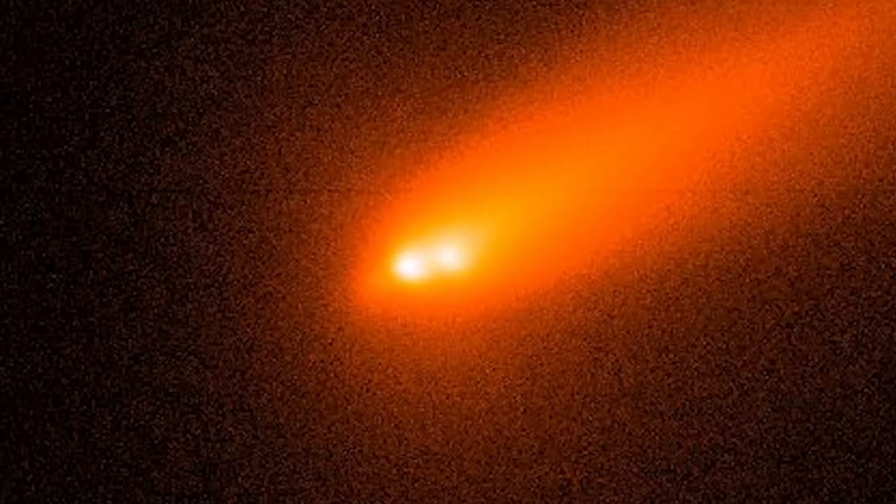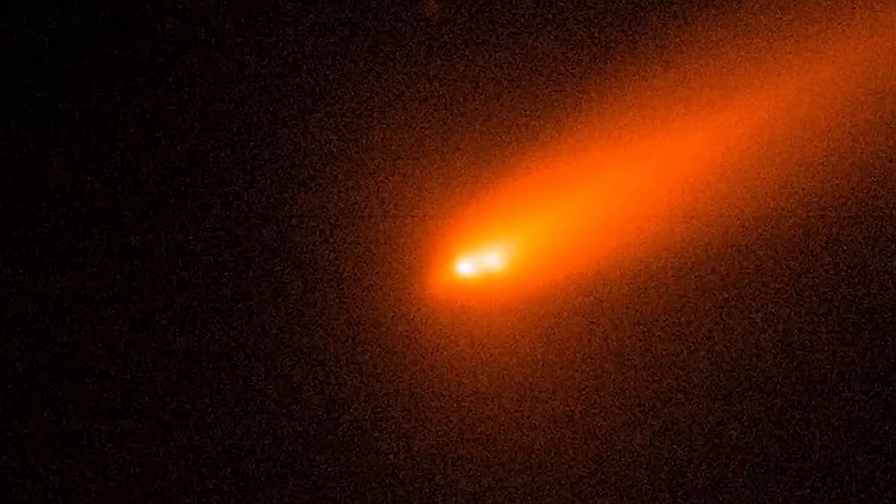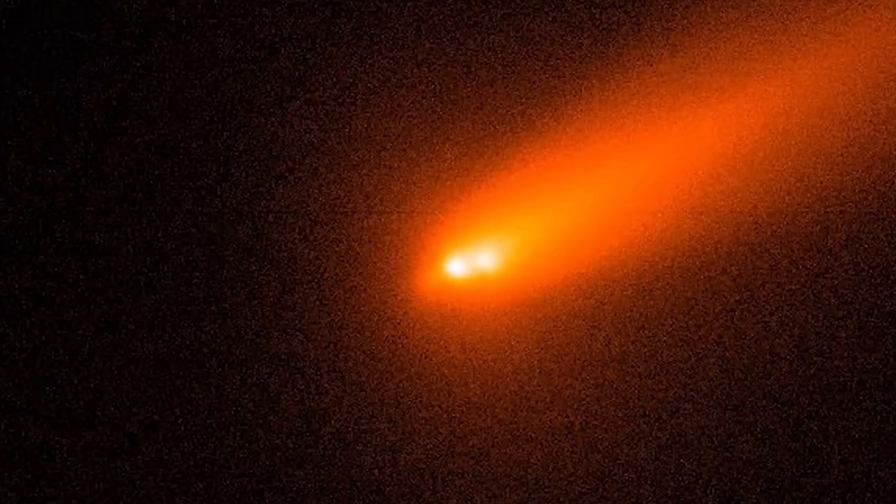The odds of an object this massive just randomly showing up in the tiny window of time we've been looking are astronomically low. Statistically, we should only expect to see a rock of this size drift through our neighborhood once every 10,000 years, maybe even longer. So for this to be the third one we find was, to put it mildly, suspicious.